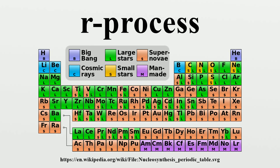The R process described by the B2FH paper was first computed time-dependently at Caltech by Philip Seeger, William A. Fowler, and Donald D. Clayton, who achieved the first successful characterization of the R process abundances and showed its evolution in time. They were also able, using theoretical production calculations, to construct more quantitative apportionment between S process and R process of the abundance table of heavy isotopes, thereby establishing a more reliable abundance curve for the R process isotopes than B2FH had been able to define.